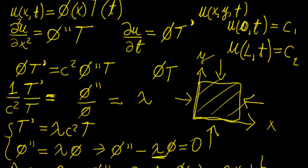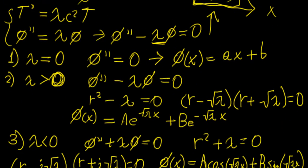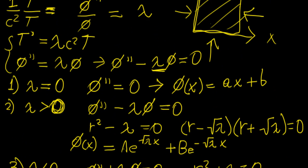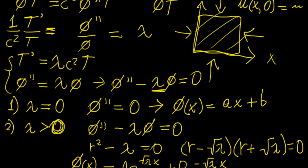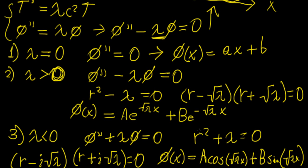The conditions for the time variable are the initial conditions familiar from ODEs — for example, u(x, 0) = f(x) for all x. To solve these equations, we first apply boundary conditions to determine which of the three solutions is appropriate and what the value of λ is, then solve the first-order ODE for T. After that, we apply other methods to find the particular solution given enough conditions. In the next video, we'll do examples showing how to find the correct solution based on different boundary conditions.